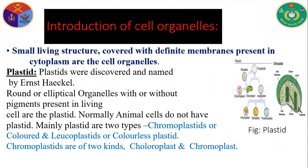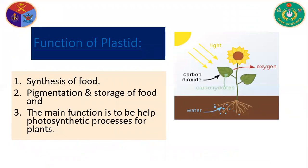Chromoplastids are of two types: chromoplasts and chloroplasts. The functions of plastids include synthesis of food, pigmentation, storage of food, and most importantly, carrying out the photosynthesis process in plants.